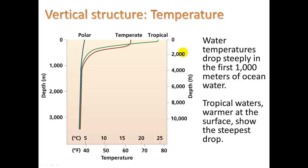As we go deeper into the ocean — from the surface going down — temperature drops. Water temperatures drop steeply in the first 1,000 meters. On the graph, temperature runs from basically freezing (32°F) up to tropical (upper 70s). Tropical areas are very warm at the surface, temperate areas like where we live are cooler, and polar regions are extremely cold. Once we go down about 1,000 meters, everything is pretty much the same temperature.